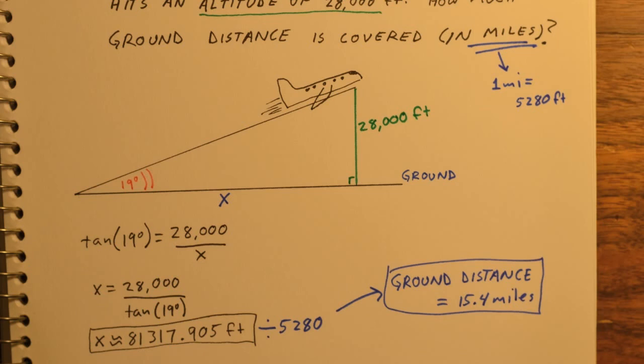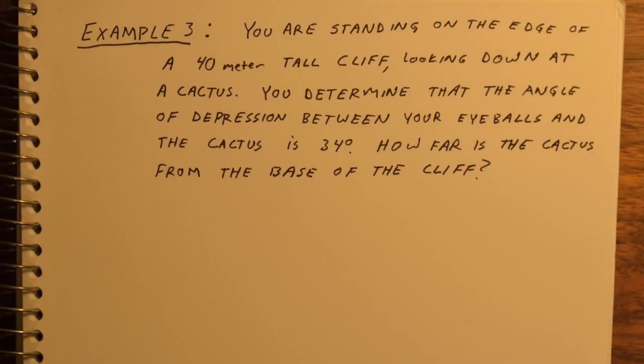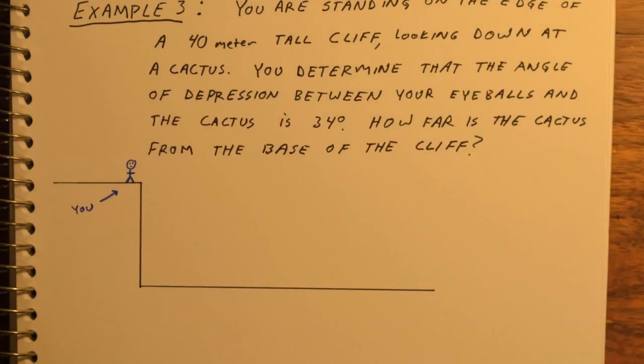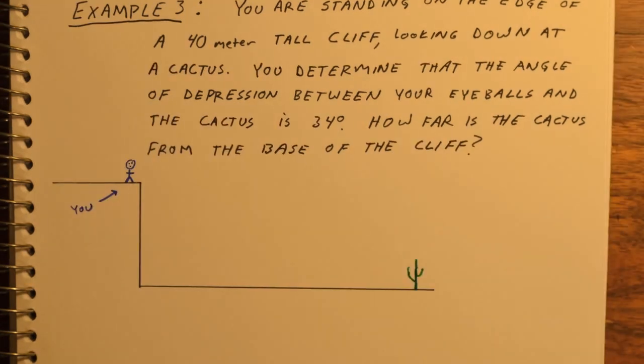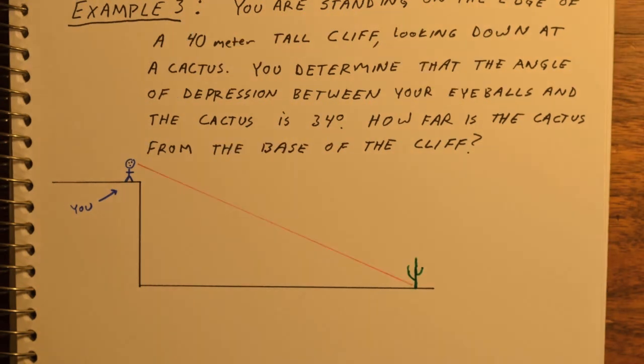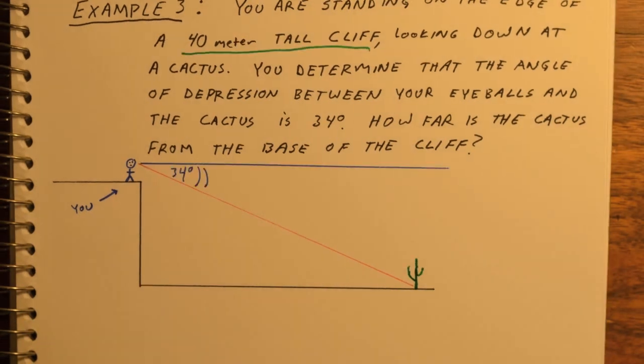Let's take a look at one more example. You are standing on the edge of a 40 meter tall cliff, looking down at a cactus. You determine that the angle of depression between your eyeballs and the cactus is 34 degrees.